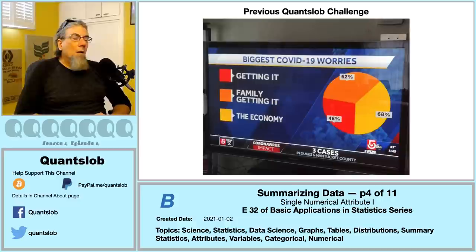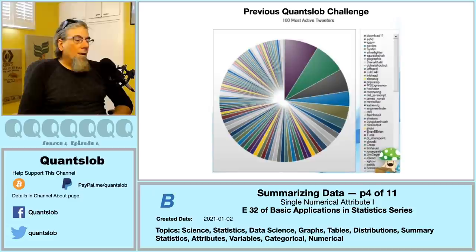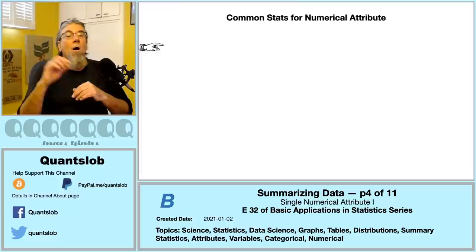Sometimes because of rounding, the category percents may not sum to exactly 100. But here the percents sum to 178. Perhaps the survey allowed users to select more than one option when asked 'what is your biggest COVID-19 worry?' The second pie chart — from an artistic perspective it has some appeal, but as a data summary it is very difficult to interpret. Data summaries and statistics should be intelligible — simple as that.